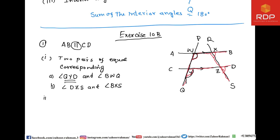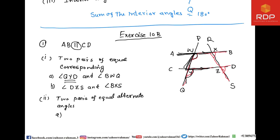In the second part, they ask for two pairs of equal alternate angles. Whenever finding alternate angles, we look for the Z shape. Here we can find a Z shape, and also a flipped Z shape.